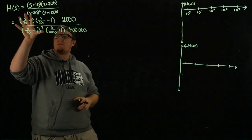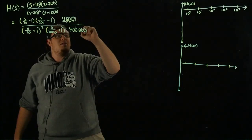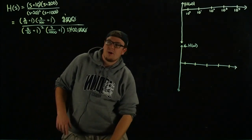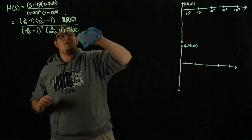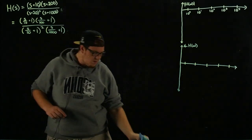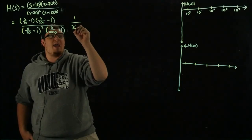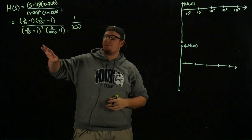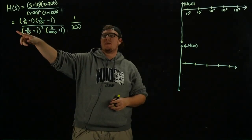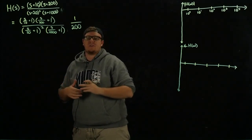Simplifying the overall constant — 2000 divided by 400,000 — gives us 1/200. This is the starting gain for our system. For frequencies much smaller than all of the break frequencies, so things much smaller than 10 (about 10 times smaller), our gain is approximately 1/200.